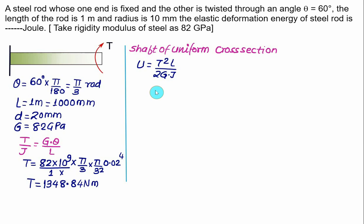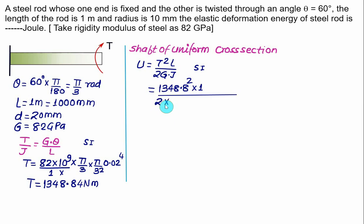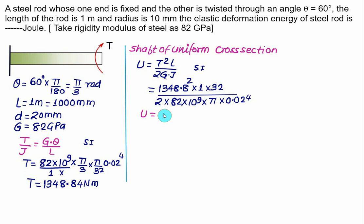Substitute this torque into the energy equation, continuing with SI units. Torque = 1348.8 N·m squared, length = 1 m, divided by 2 × G (82 × 10⁹ Pa) × J, where J = (π/32) × (0.02)⁴. Solving, you get strain energy directly in N·m. So U = 705.18 N·m, which is the same as 705.18 Joules.